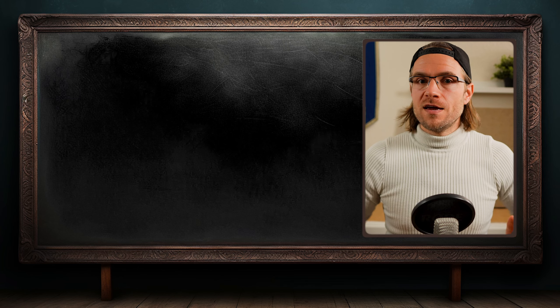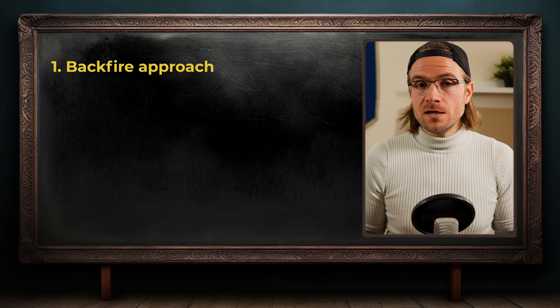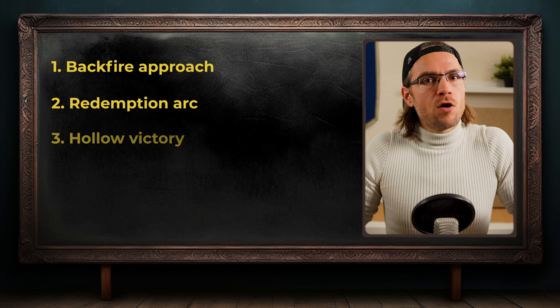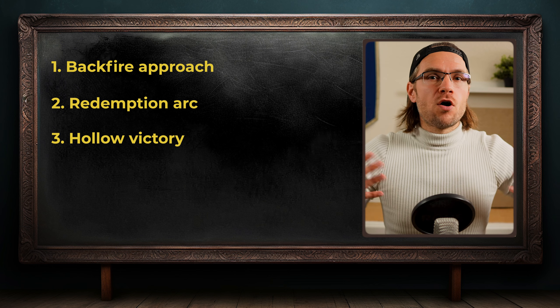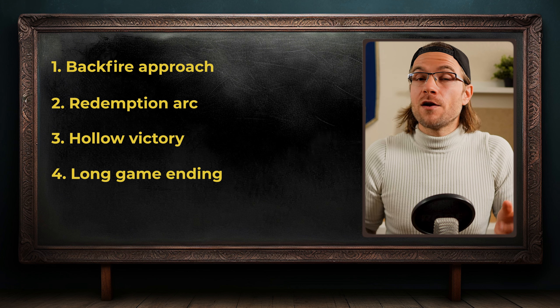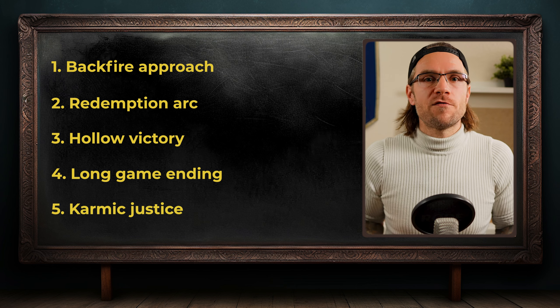As we approach the end of our journey through the world of trickster villains, we come to perhaps the most challenging part: how do we bring their story to a satisfying conclusion? The key to a great trickster ending is to make it both unexpected and inevitable — it should surprise your readers while still feeling true to the character. Here are some approaches: first, the backfire approach, where the trickster's downfall comes from their own clever plan backfiring in a way they couldn't predict. Second, a redemption arc where the trickster realizes the error of their ways and chooses to use their skills for good. Third, a hollow victory where the trickster achieves their goal but at a cost that makes the victory unsatisfying. Fourth, the long game ending where the trickster's apparent defeat is revealed to be part of an even grander scheme. And lastly, karmic justice — have the trickster undone by the same type of manipulation they used on others.